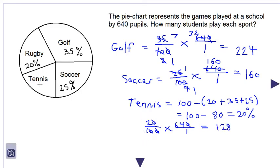We also see that rugby has the same percentage of 20 percent. So the number of rugby students is equal to the number of tennis students which is equal to 128 students.